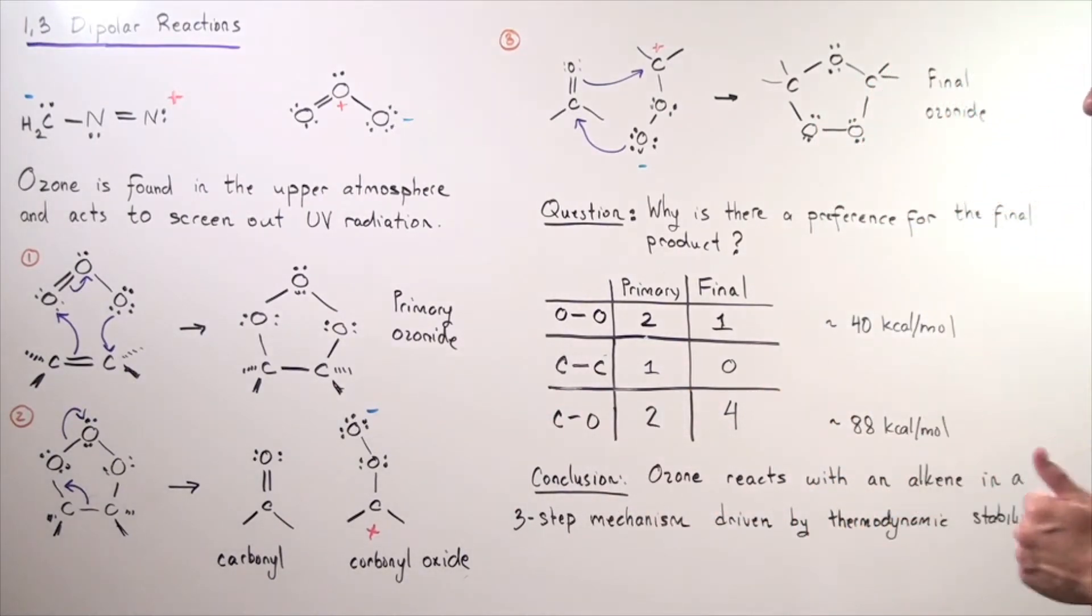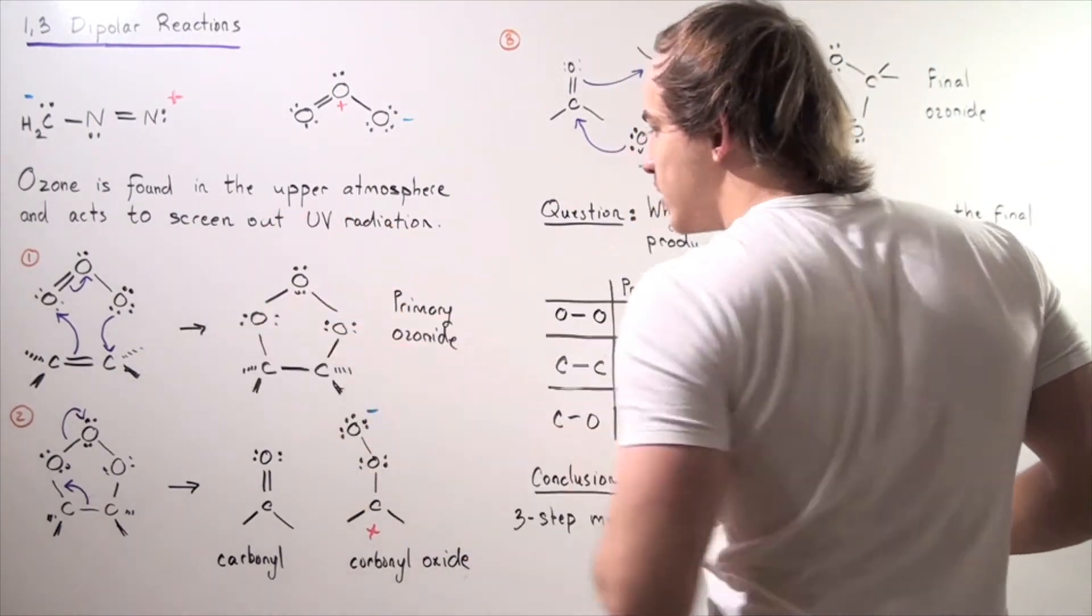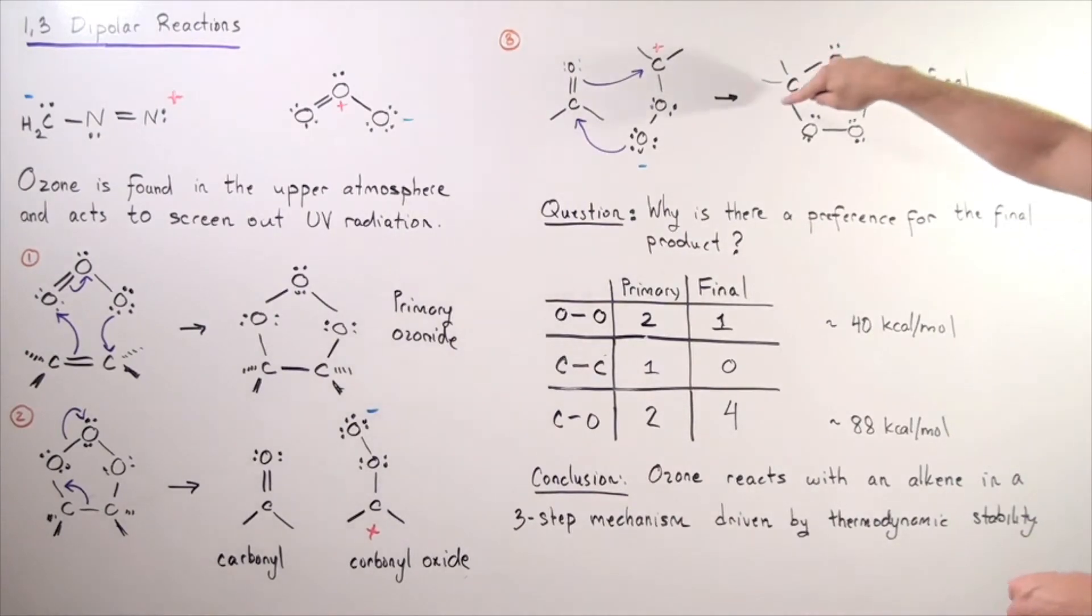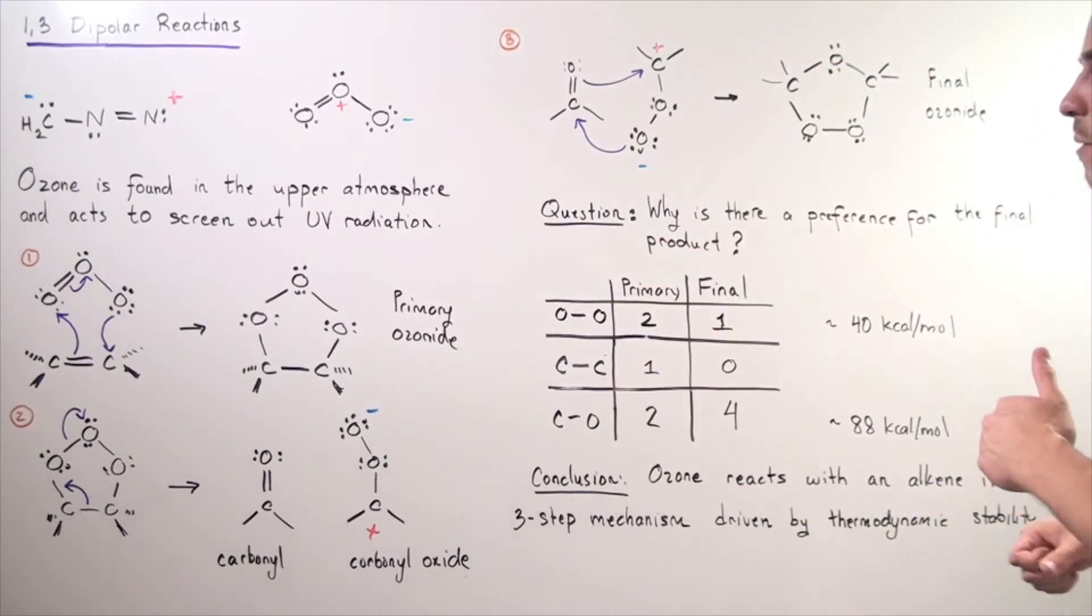So, let's account the number of bonds we have in this molecule, in this cyclic ring. We have five bonds of each type. So let's tally the types of bonds we have. So notice that for the primary, we have two oxygen-oxygen bonds.